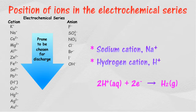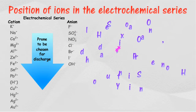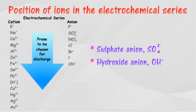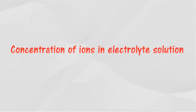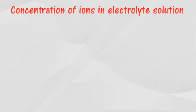At the cathode, hydrogen ion will be preferably discharged as it is below sodium ion in the electrochemical series. If there are sulfate anion and hydroxide anion in an electrolyte solution, both ions will be attracted to the anode. At the anode, hydroxide ion will be preferably discharged as it is below sulfate ion in the electrochemical series.